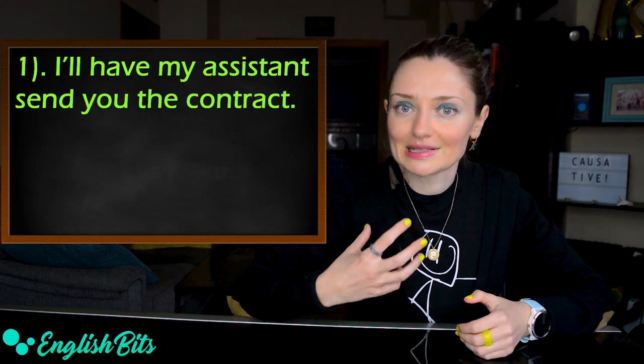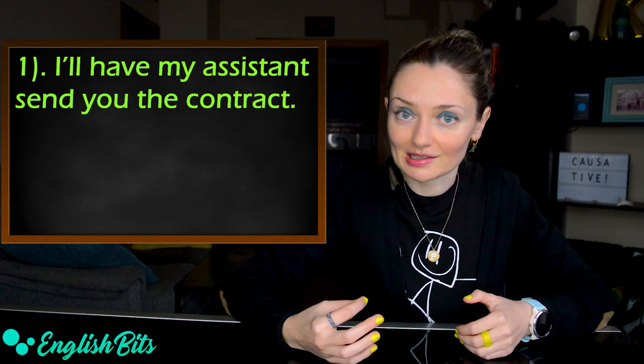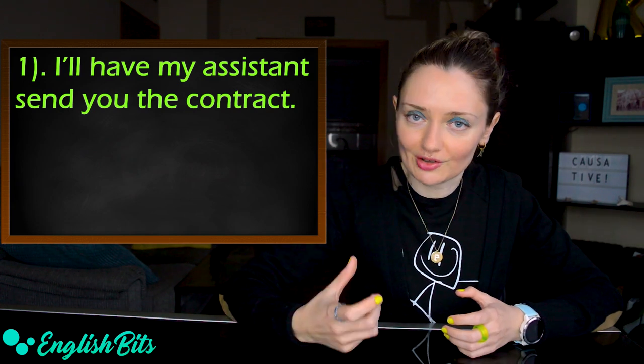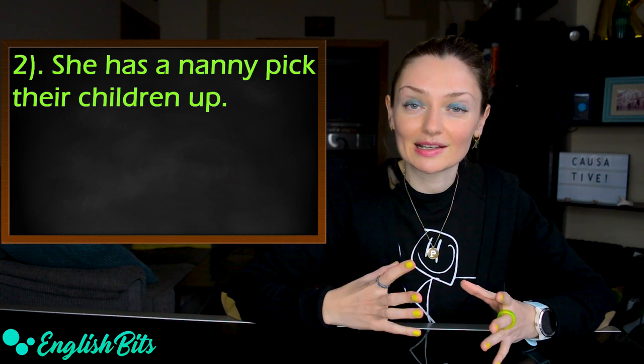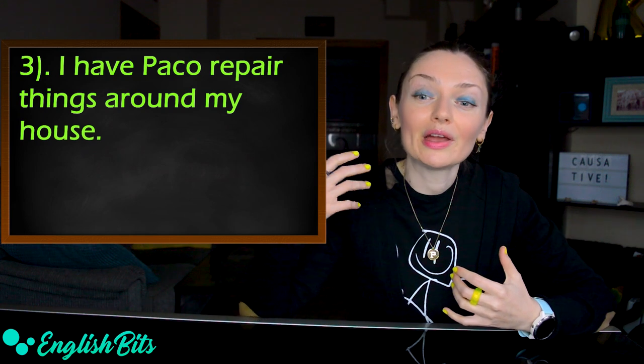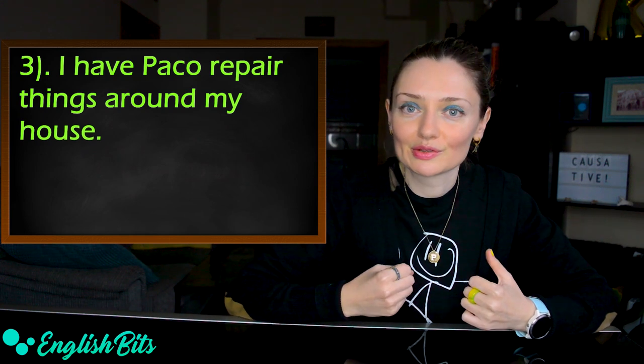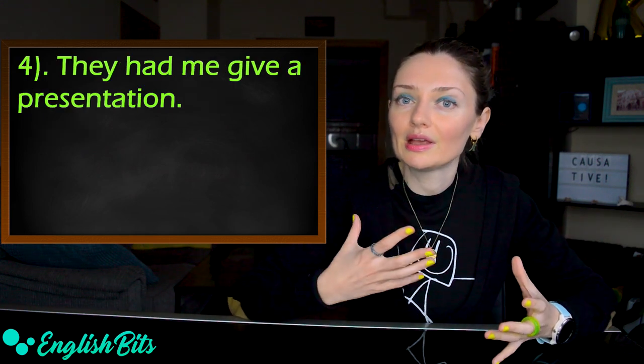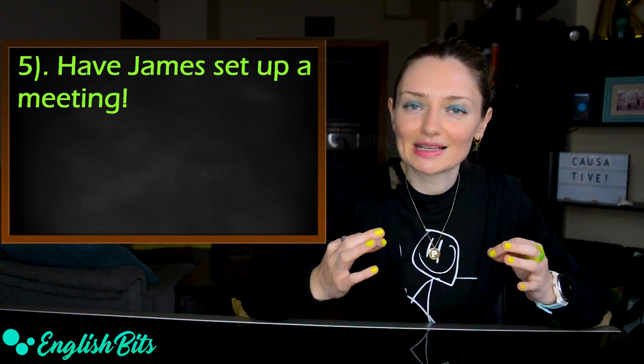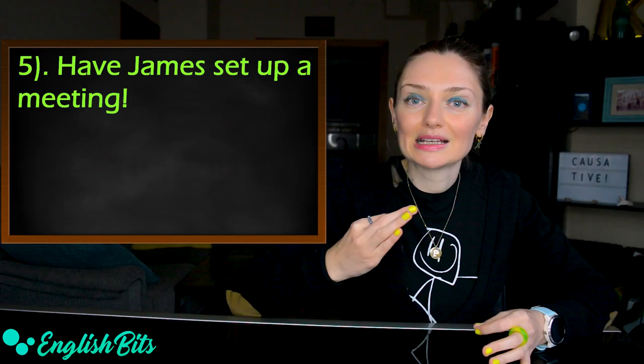Let's look at some examples. The first one: I'll have my assistant send you the contract. So it's like I'll ask my assistant to send you the contract. Number two: She has a nanny pick their children up. Number three: I have Paco repair things around my house. Number four: They had me give a presentation. And one more example, in this case, imperative: Have James set up a meeting.